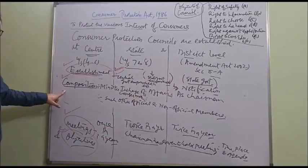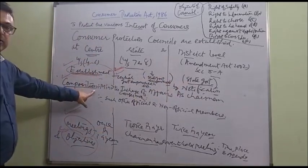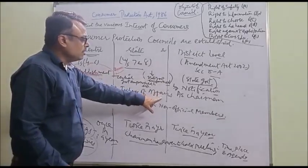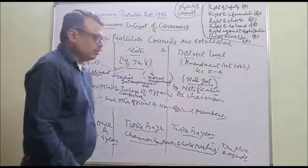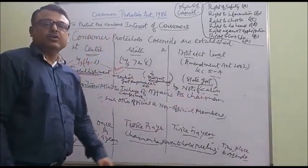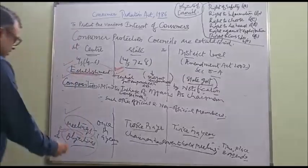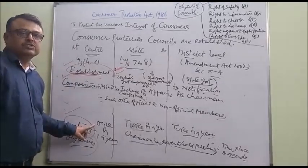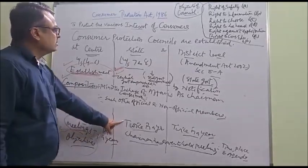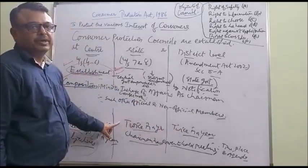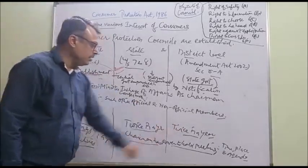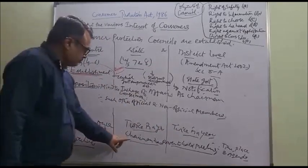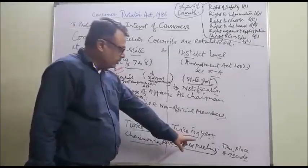Next is Composition. Composition means what type of members are there in the Council. The Minister in charge of Consumer Affairs is the Chairman of the Council, along with such other official and non-official members as prescribed. Regarding Meetings, the Central Council has to hold at least one meeting in a year, and State and District Councils have to hold two meetings in a year. The Chairman has the power to hold the meeting and decides the time, place and agenda.